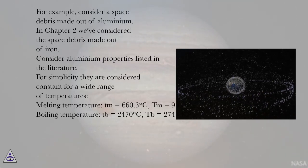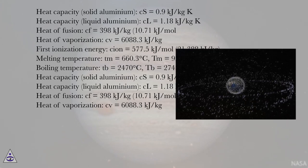Melting temperature: TM equals 660.3 degrees Celsius, TM equals 933.3 K. Boiling temperature: TB equals 2470 degrees Celsius, TB equals 2743 K. Heat capacity solid aluminum: CS equals 0.9 kilojoules per kilogram-Kelvin. Heat capacity liquid aluminum: CL equals 1.18 kilojoules per kilogram-Kelvin. Heat of fusion: CF equals 398 kilojoules per kilogram, 10.71 kilojoules per mole. Heat of vaporization: CV equals 6088.3 kilojoules per kilogram. First ionization energy: CI equals 577.5 kilojoules per mole, 21,388 kilojoules per kilogram.